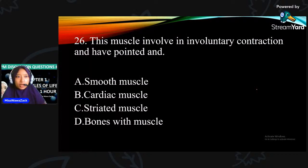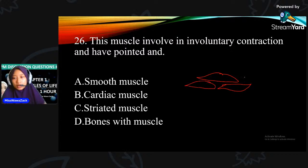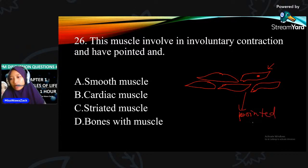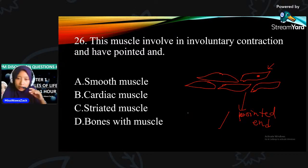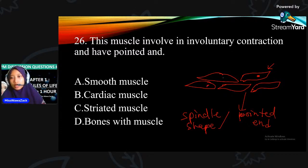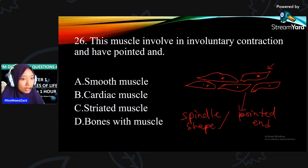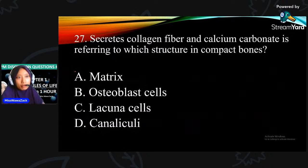Number 26: this muscle involved in involuntary contraction and have pointed end - bentuk macam mata, hujung-hujung tirus, tappered end, spindle shape. Bukan dalam bentuk silinder. They are unbranched. Jawapan dia A - smooth muscle.